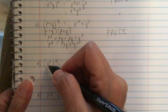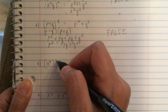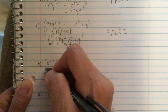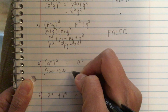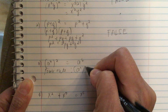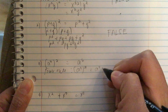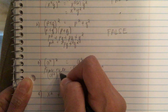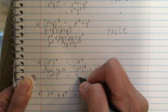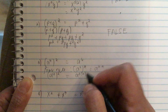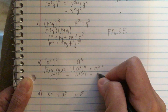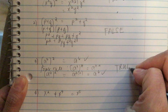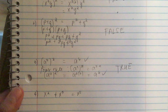Does (a³)² equal a⁶? Using the power rule, (a^n)^m = a^(n×m), so a³ squared equals a^(3×2), which equals a⁶. So this is a true statement.